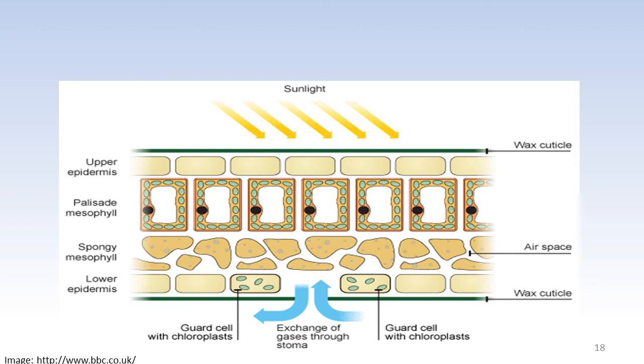This is an internal view or a transverse section through a leaf. The palisade mesophyll layer contains a lot of chloroplasts. It is where most of the photosynthesis occurs.